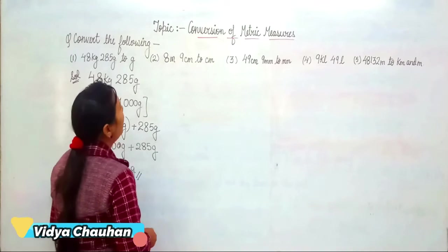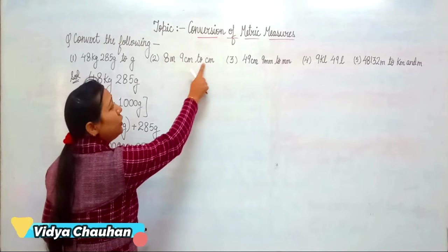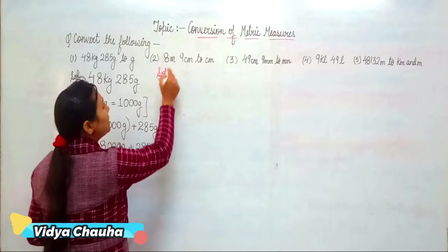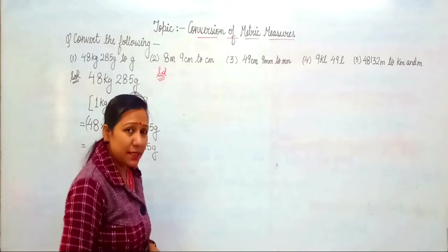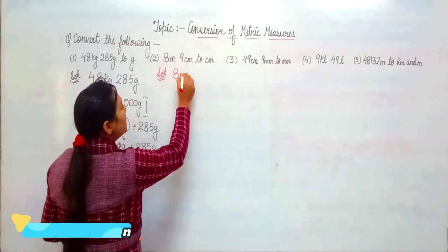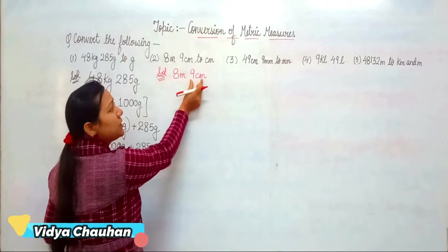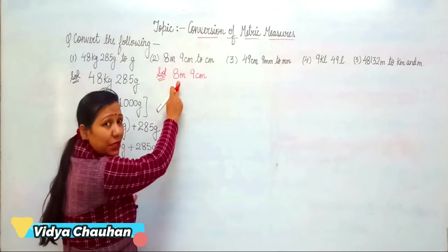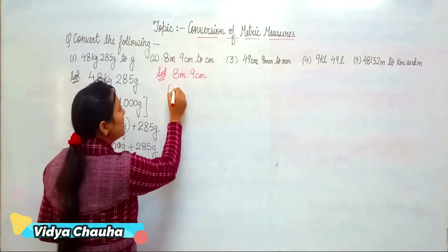Coming to the second part: convert 8 meters 9 centimeters to its centimeter form. We have to convert this metric unit from meters and centimeters to only centimeters. Let us write the question: 8 meters and 9 centimeters. The 9 centimeters term is already in centimeters, so we just need to convert 8 meters into centimeters.